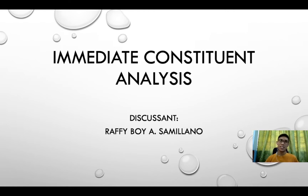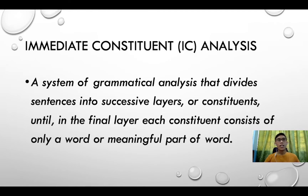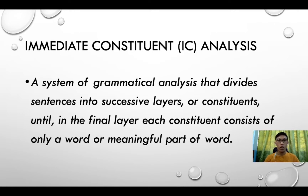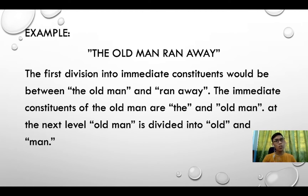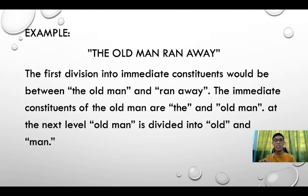IC analysis is a process of analyzing a sentence by dividing it into various small parts. It is a system of grammatical analysis that divides sentences into successive layers or constituents until in the final layer each constituent consists of only a word or a meaningful part of a word. For example, in the sentence 'the old man ran away,' the first division into immediate constituents would be between 'the old man' and 'ran away.' The immediate constituents of 'the old man' are 'the' and the phrase 'old man.' At the next level, 'old man' is divided into 'old' and 'man.'